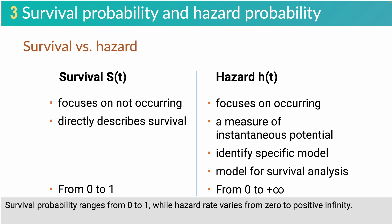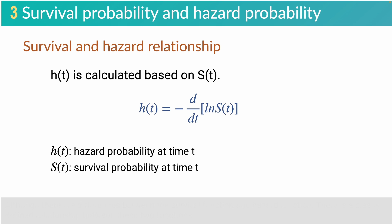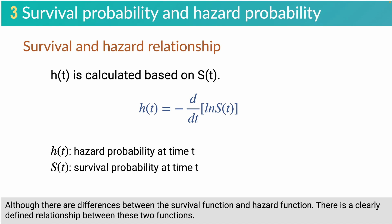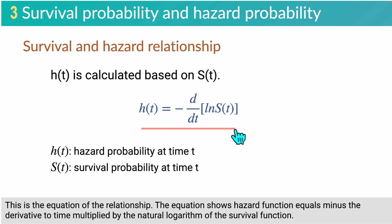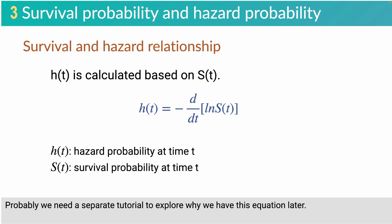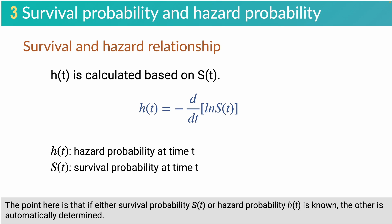Survival probability ranges from 0 to 1, while hazard rate varies from 0 to positive infinity. Although there are differences between the survival function and hazard function, there is a clearly defined relationship between these two functions. The equation shows that the hazard function equals minus the derivative with respect to time of the natural logarithm of the survival function. The point here is that if either survival probability or hazard probability is known, the other is automatically determined.